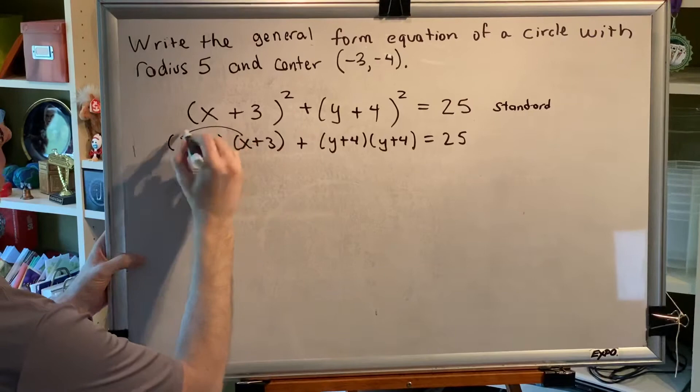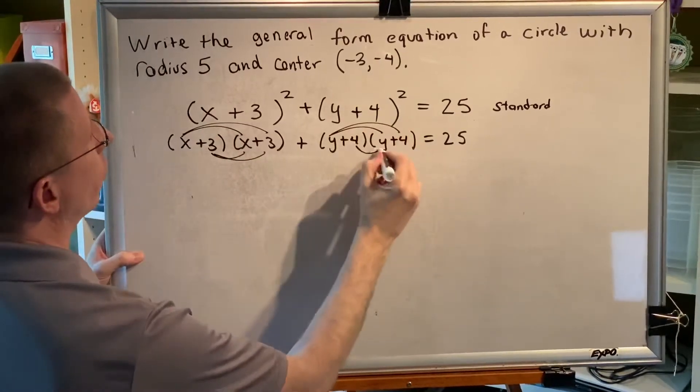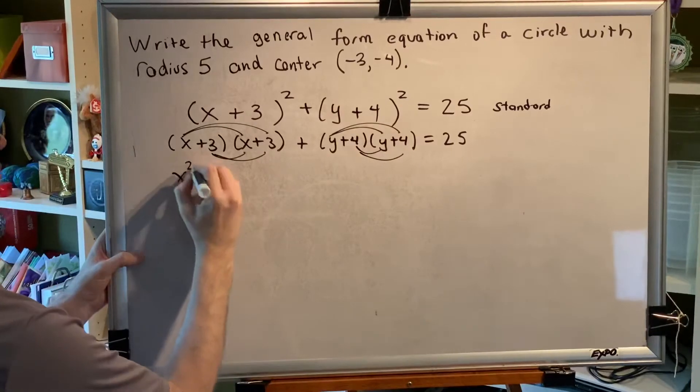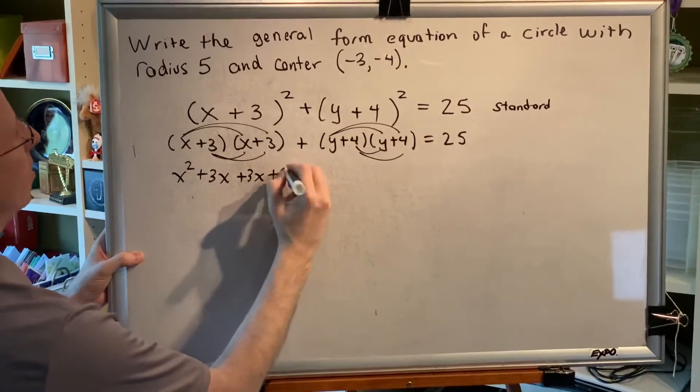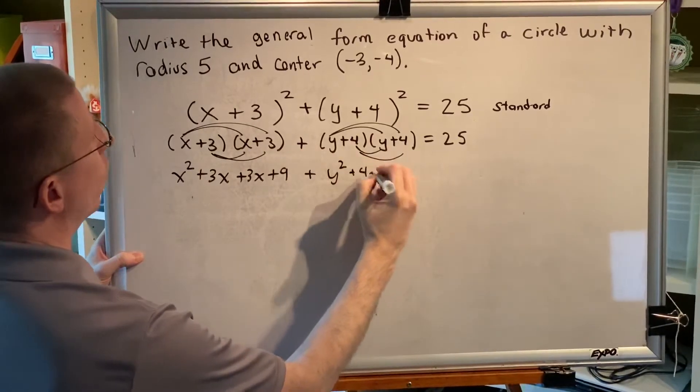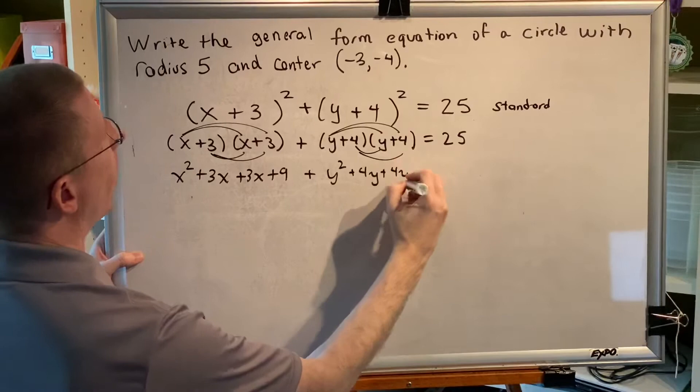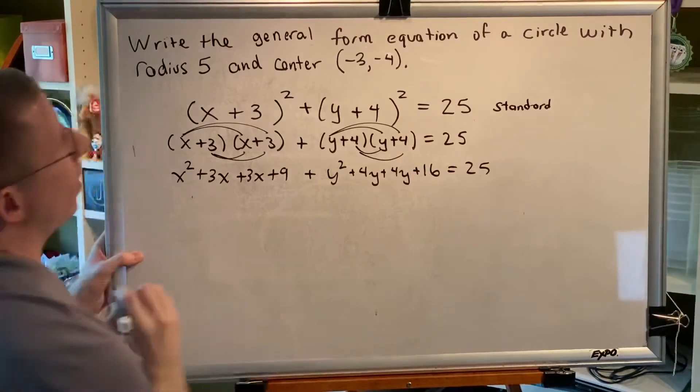Applying the FOIL method to both of these multiplying binomials, we would get x² + 3x + 3x + 9 plus y² + 4y + 4y + 16. And I'll still keep my equals 25.